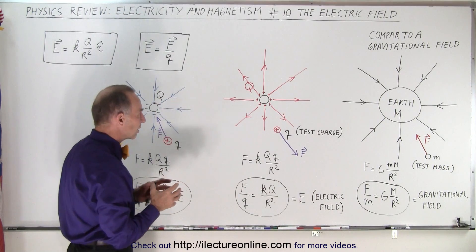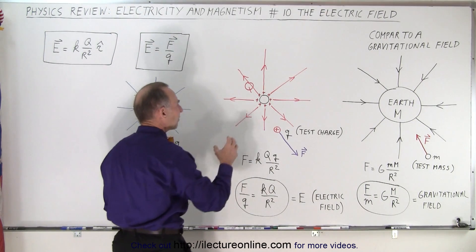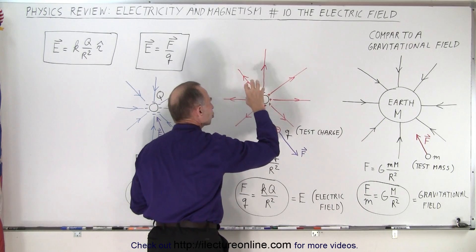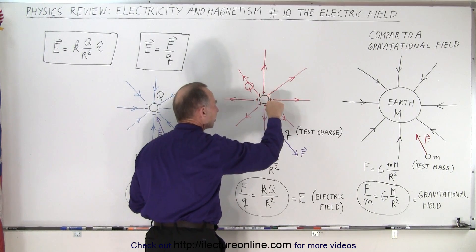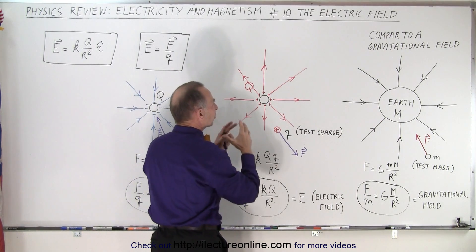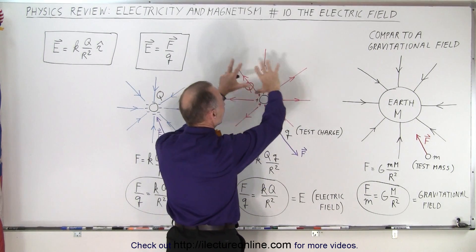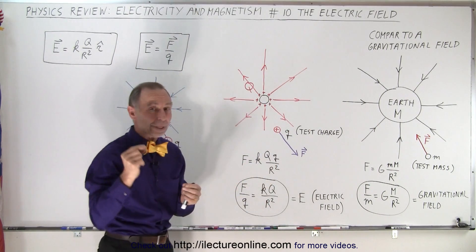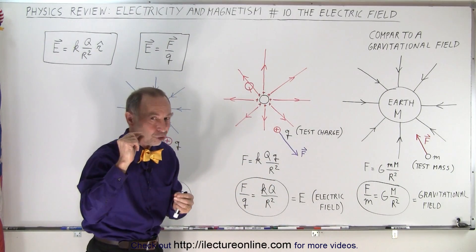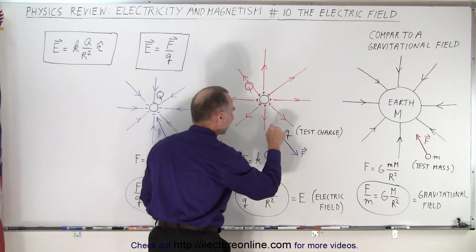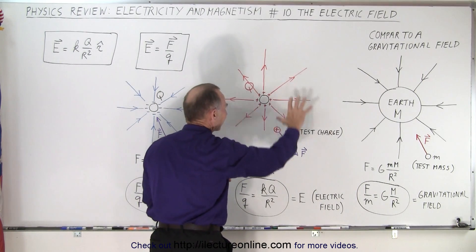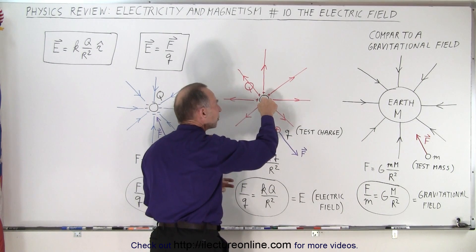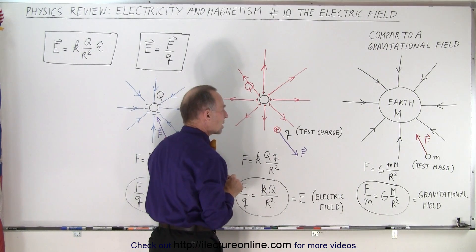Now let's come over here. Instead of having an object with mass, we have an object with charge — positive charge — and so there exists a field around it emanating outward. How do we know that? We can take a test charge, a small q, and place it inside the field, and it will experience a force away from this charge.